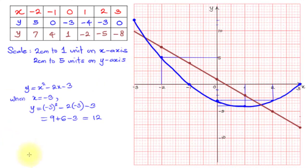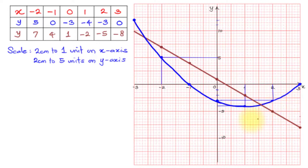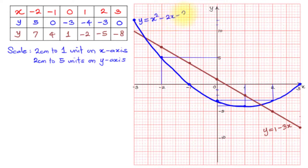We can now see two points of intersection between the two graphs. As a rule of thumb, always label your graphs. The brown line is y = 1 - 3x, and the blue curve is y = x² - 2x - 3.